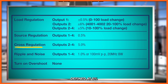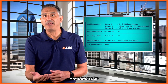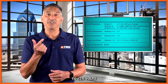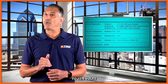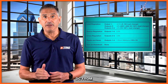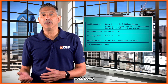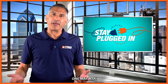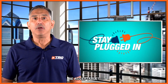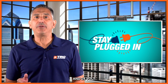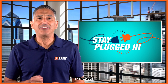You will notice that the cross-regulation is defined at five percent between outputs two, three, and four. This means that a 12-volt output may deviate up to 12.6 volts or down to 11.4 volts DC from a light load to full load on the main output.